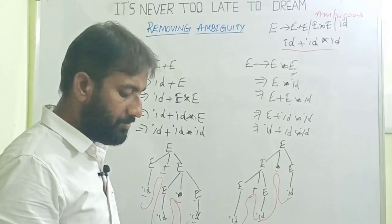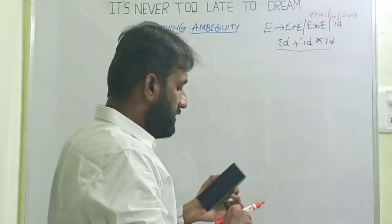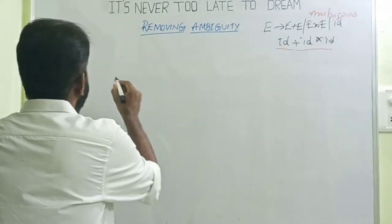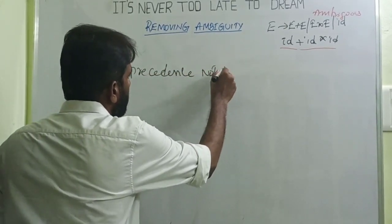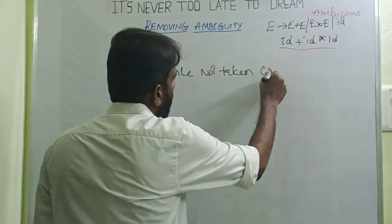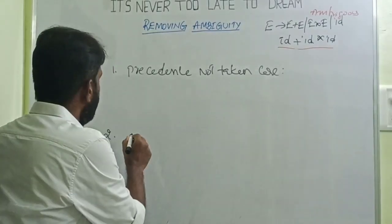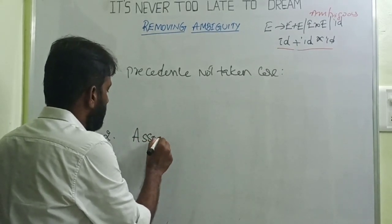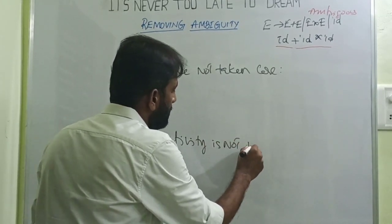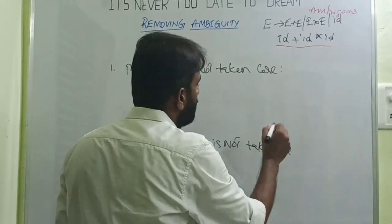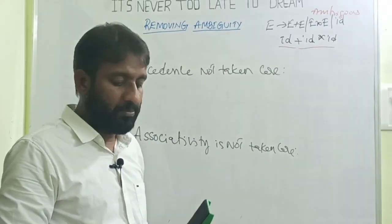Taking this same grammar, there are two reasons why ambiguity exists. The first problem is that precedence is not taken care of. The second problem is that the associativity of operators is not implemented. These are the two problems with this grammar. If you take care of these two properties, you can convert an ambiguous grammar into an unambiguous grammar.